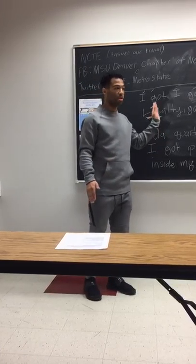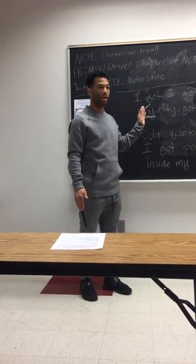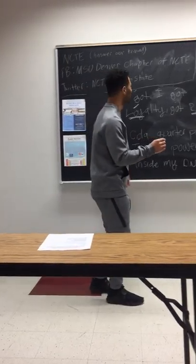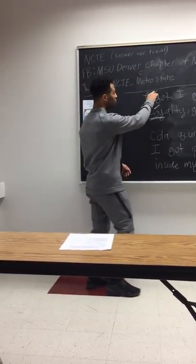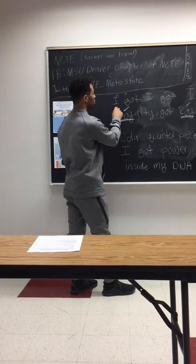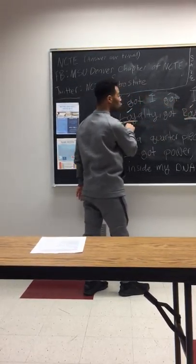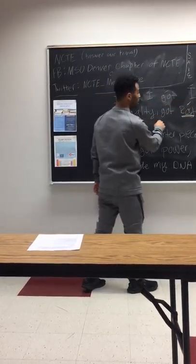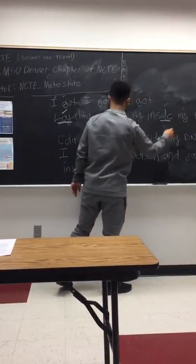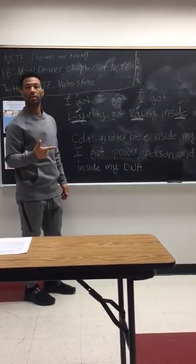Do I need to rap this first so that we understand the cadence? Okay. So if we see these accent marks, that's where the syllables go. I got, I got, I got loyalty, got royalty inside my DNA. Did that make sense? Could you hear where I placed the accent?